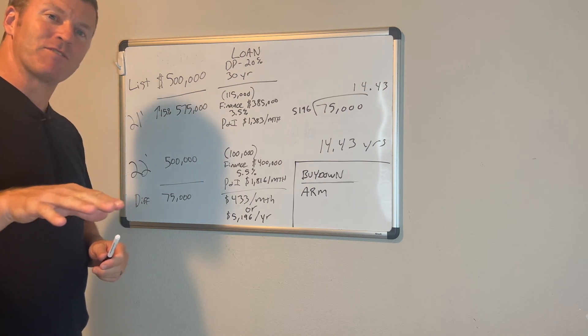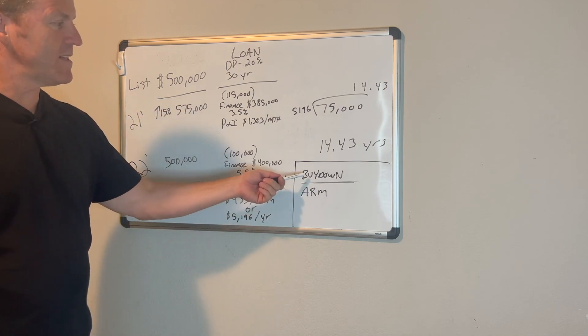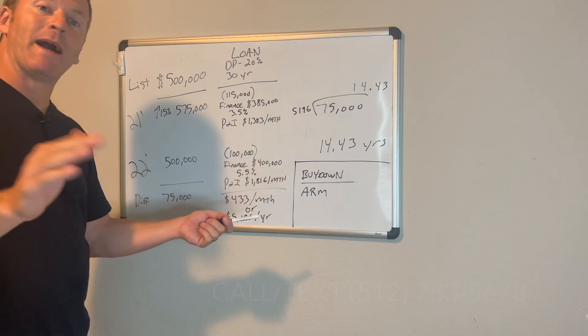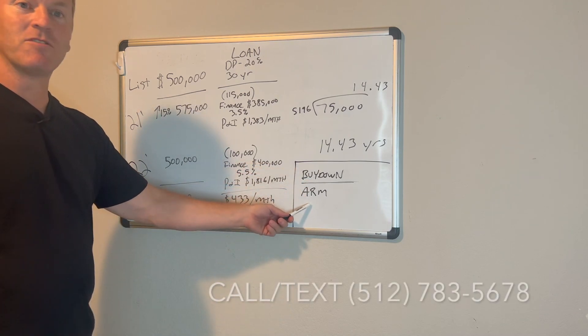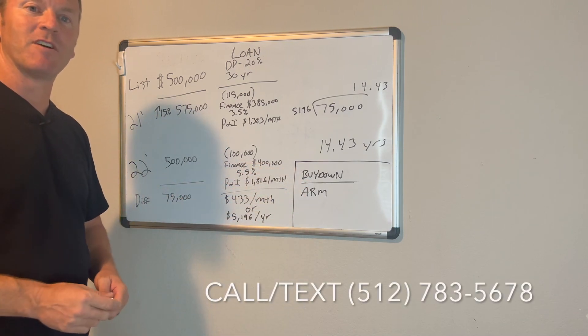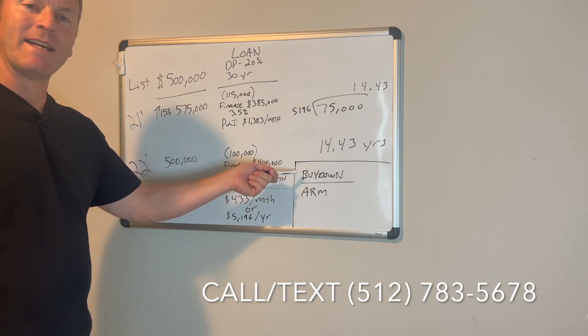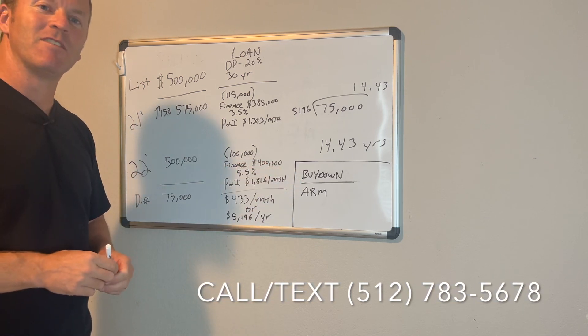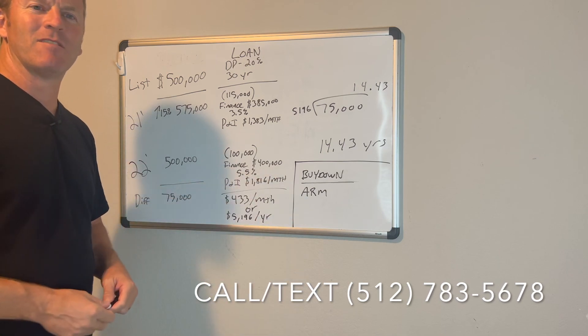Now, if you still want to get your interest rate down, there are also options. You can do buy downs, which is where you buy down points. You can also do an ARM, which is an adjustable rate mortgage. So if you want to learn a little more about buy downs, watch my video at the end of this video to see what buy downs are all about.